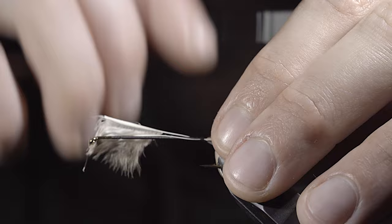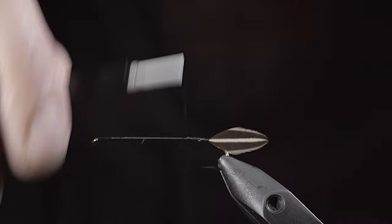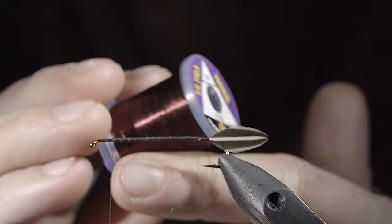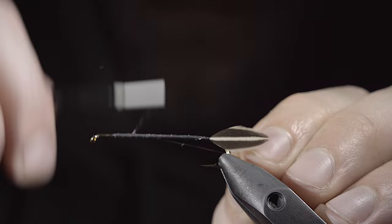We'll then wrap our thread back towards the head of the fly and grab some brassy wire. Here I'm using the color wine. Secure the wire to the hook shank and wrap back towards the tail.